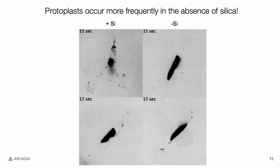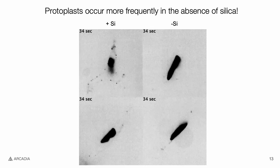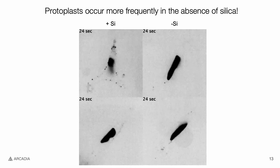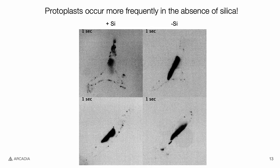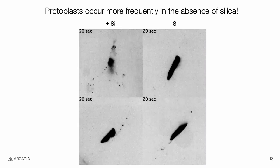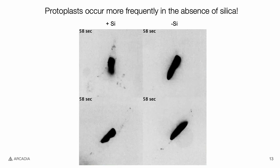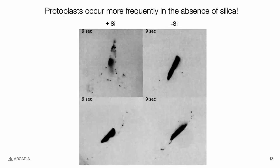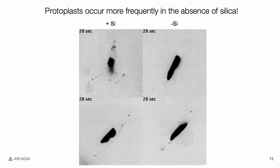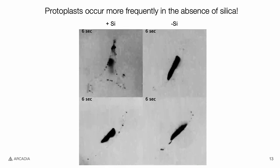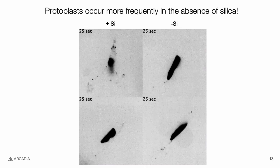We were able to visualize live actin dynamics in these cells using the SPY555-FastAct dye. Although much of the dye appeared to stain the chloroplast, the dynamic cortical puncta are reminiscent of endocytic actin patches found in several eukaryotes. However, when grown in the absence of silica, the patches appear to have shorter lifetimes and bleach quicker. Again, whether this is because of an actin-silica relationship, or if silica-free cells just have a weaker cell wall and need less actin to carry out endocytosis, is unclear. This data is very preliminary and will be improved upon by tagging actin patches with a fluorescent marker rather than staining with the dye.